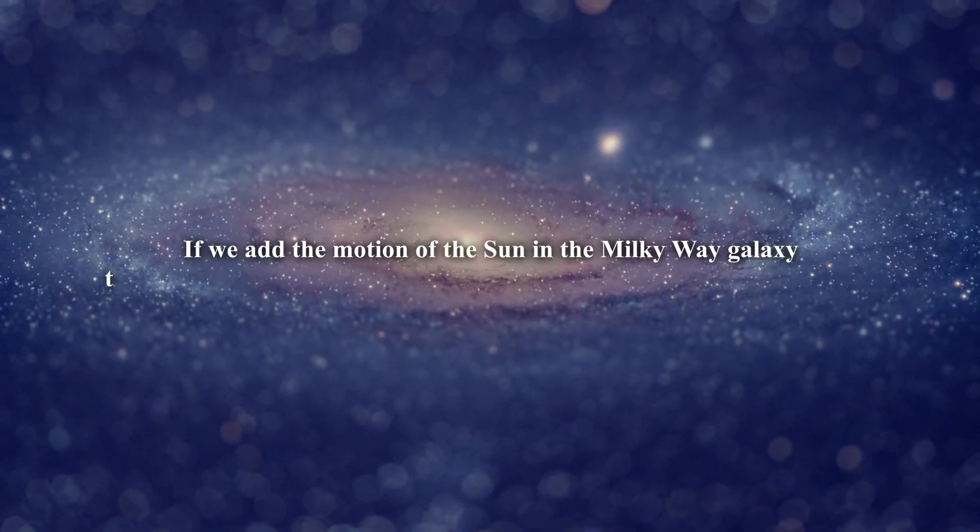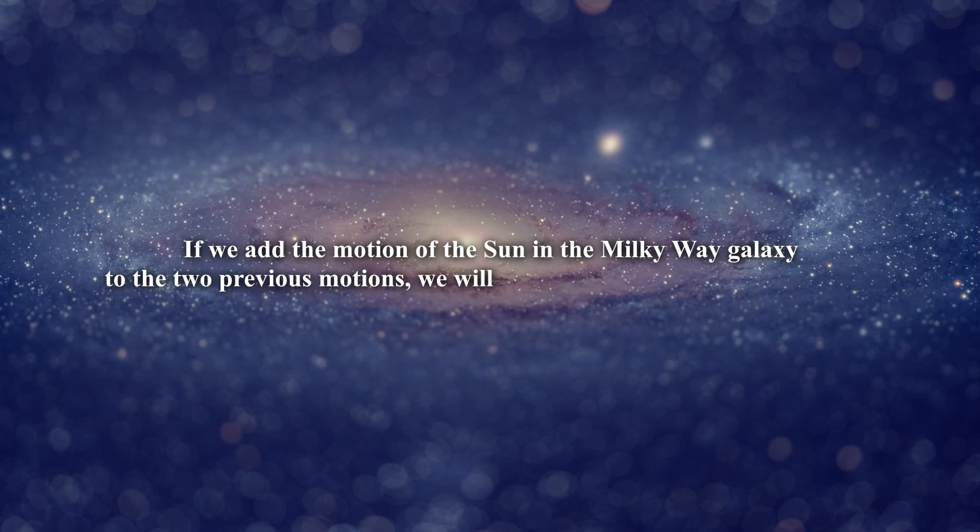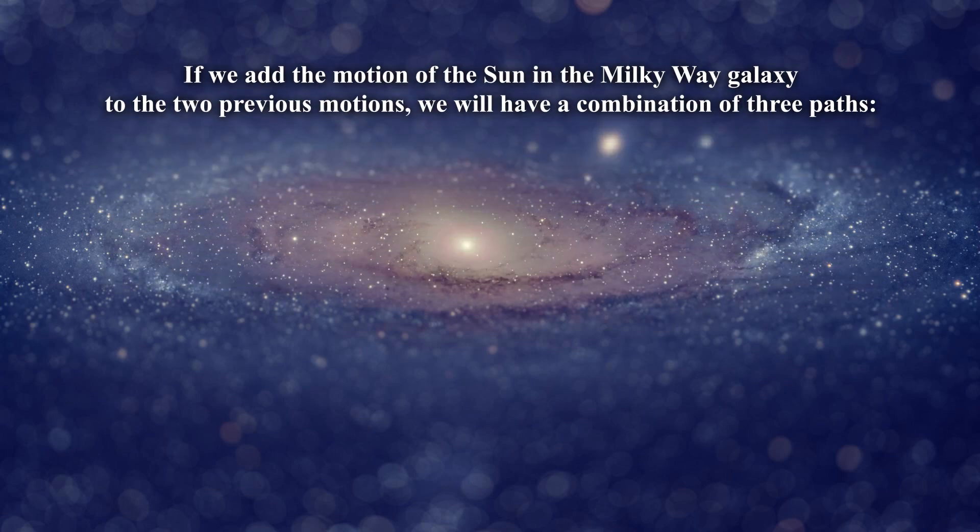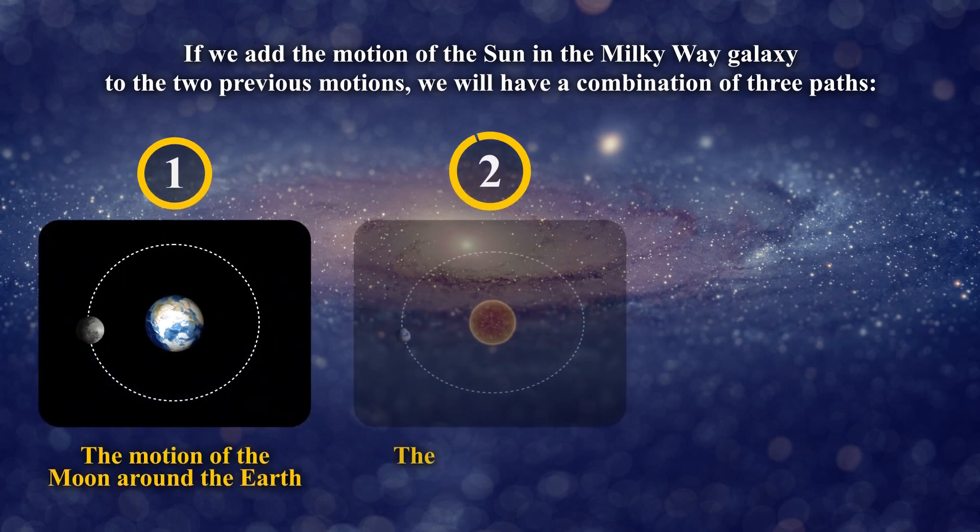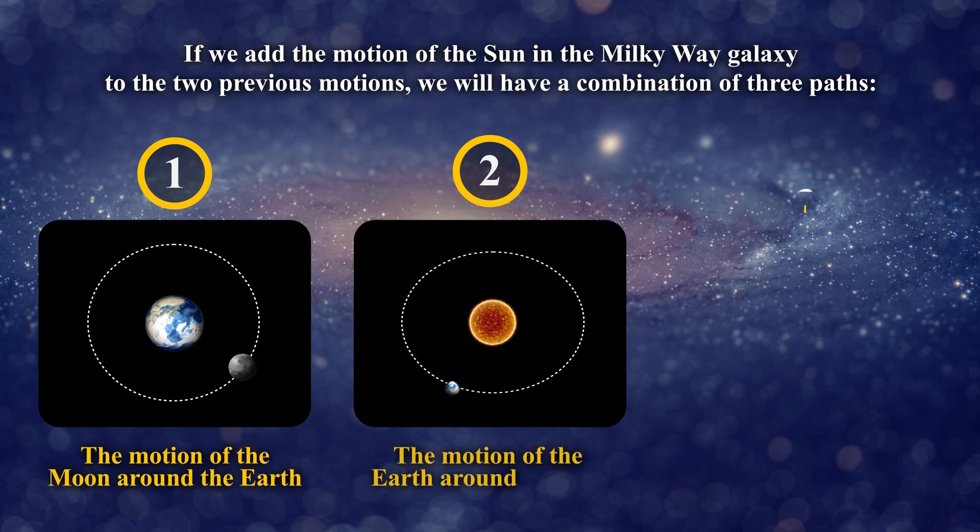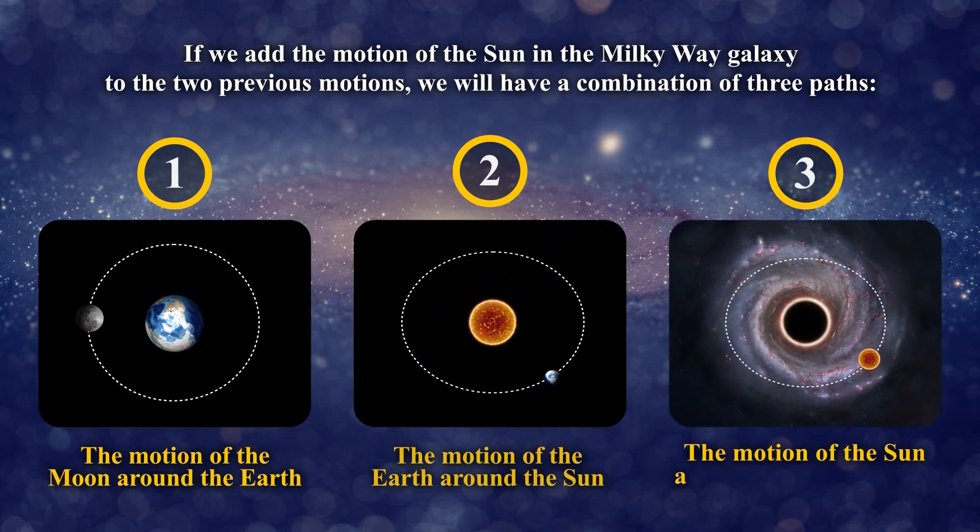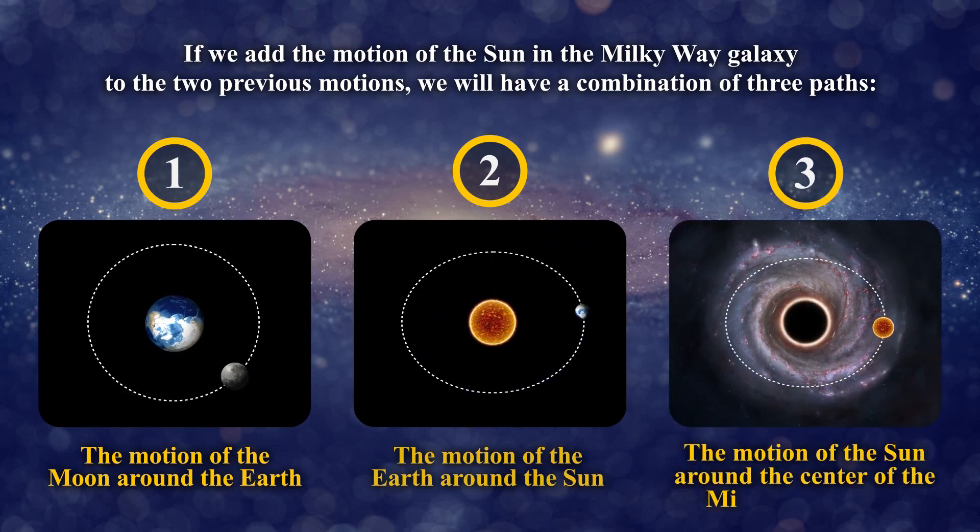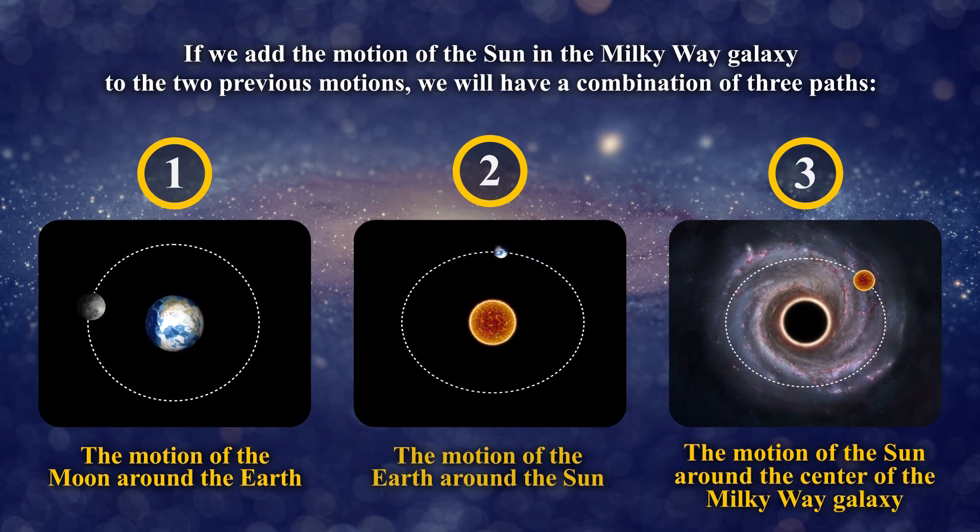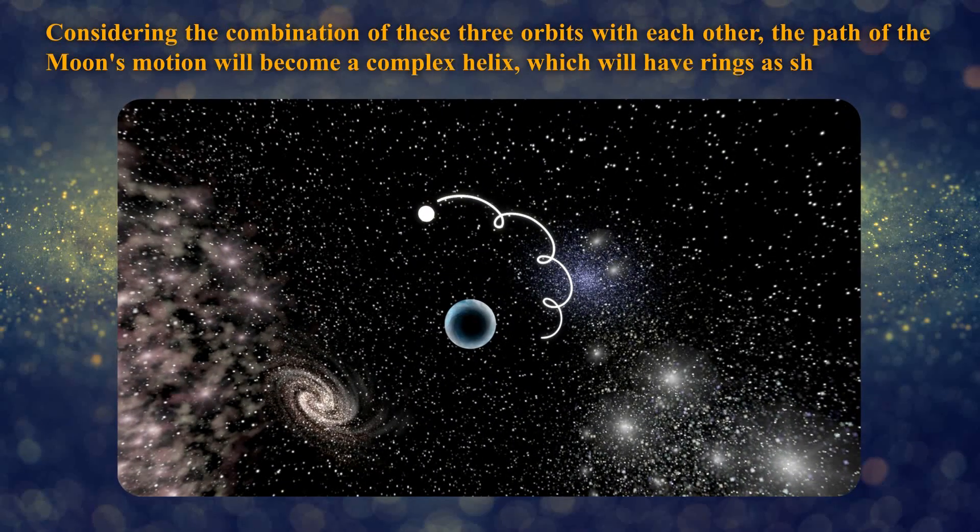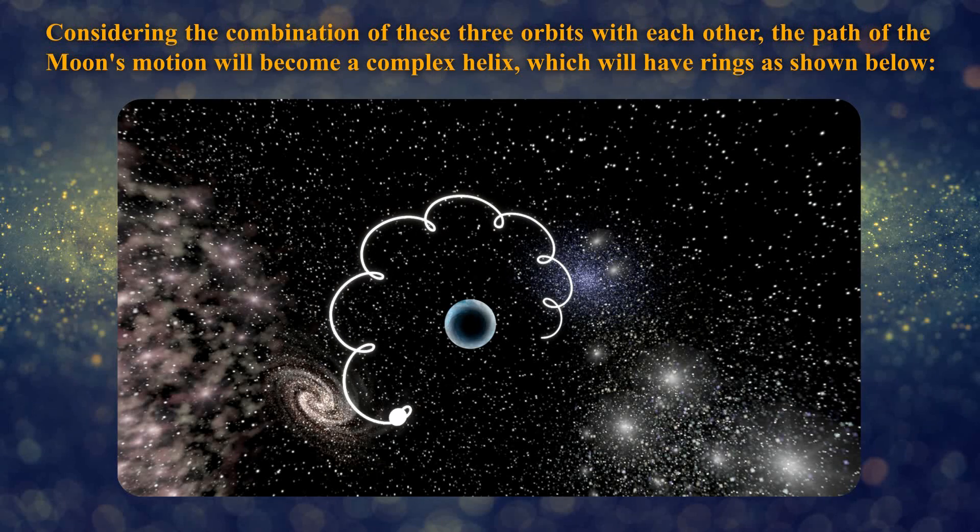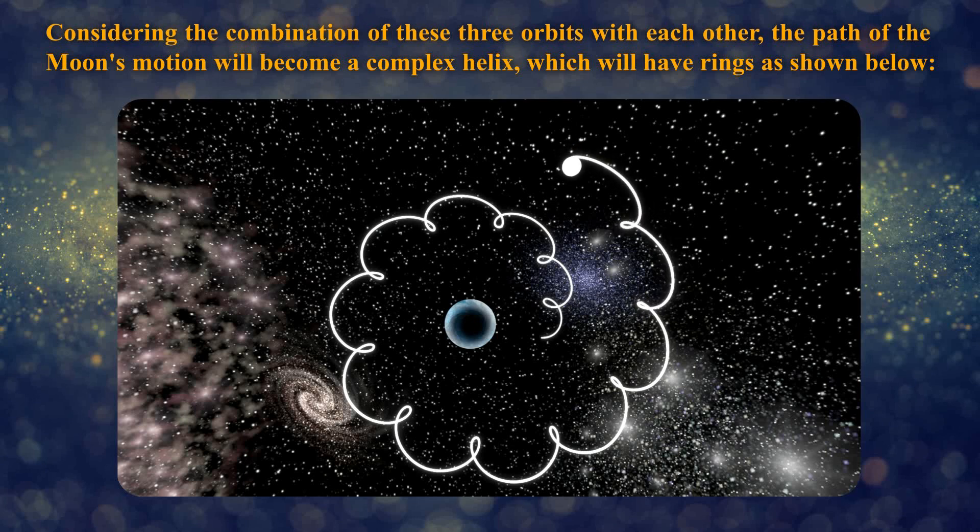If we add the motion of the Sun in the Milky Way galaxy to the two previous motions, we will have a combination of three paths: one, the motion of the Moon around the Earth; two, the motion of the Earth around the Sun; and three, the motion of the Sun around the center of the Milky Way galaxy. Considering the combination of these three orbits with each other, the path of the Moon's motion will become a complex helix which will have rings as shown below.